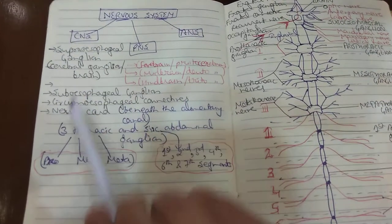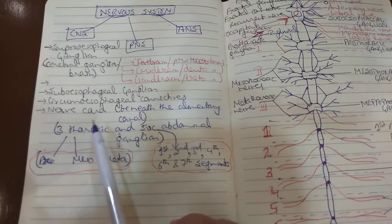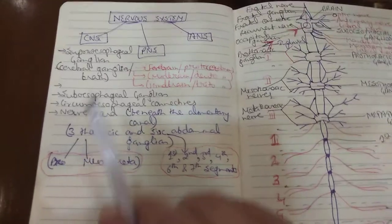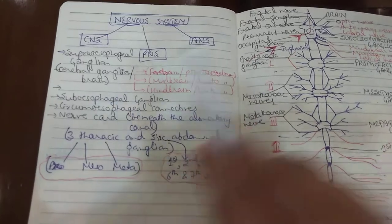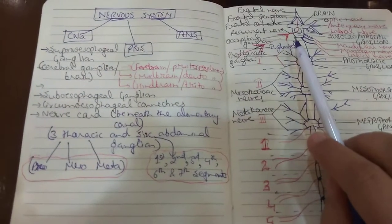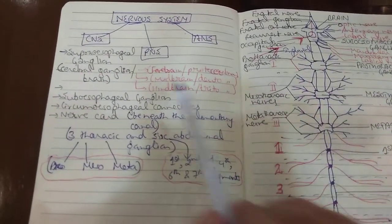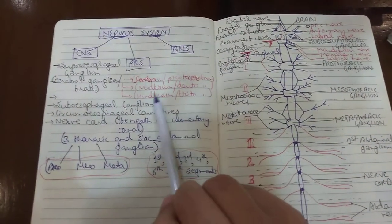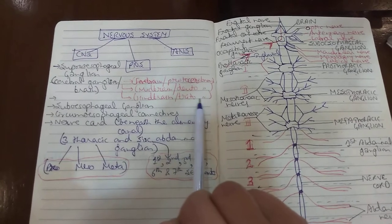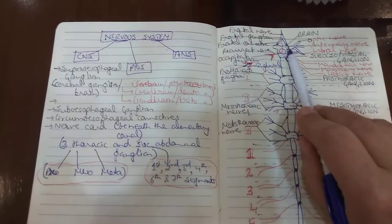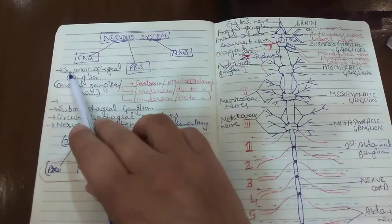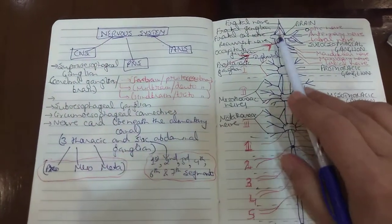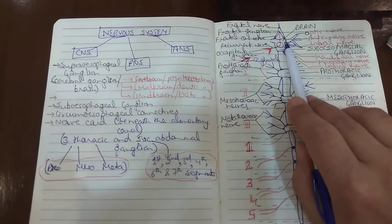First is the central nervous system. It consists of the supraesophageal ganglion, which is also referred to as the cerebral ganglion or brain. This is formed by the fusion of three pairs of ganglia and has three parts: the forebrain or protocerebrum, the midbrain or deutocerebrum, and the hindbrain or tritocerebrum. This supraesophageal ganglion lies in the head region above the esophagus, which is why it is referred to as the supraesophageal ganglion.